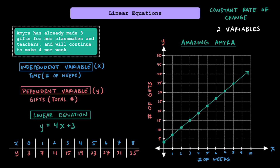Amira has already made three gifts for her classmates and teachers, and will continue to make four per week. The reason why we know this is going to represent a linear equation is because while Amira has already made three gifts, she's going to continue making four per week at a constant rate of change. Each week, Amira is going to consistently make four more gifts.